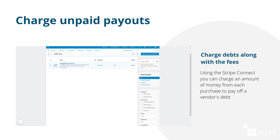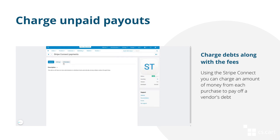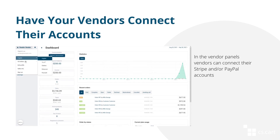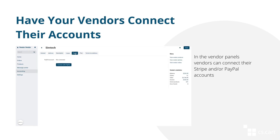Stripe Connect allows you to charge unpaid payouts along with the transaction fees. This means that if a vendor has a debt, Stripe will charge an amount from each purchase to pay off that debt. If you use payment systems to split money in your marketplace, your vendors have to connect their accounts of these systems.